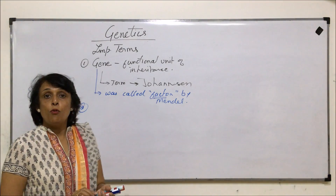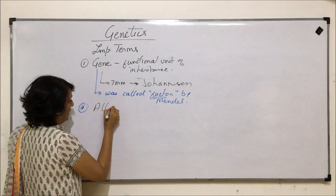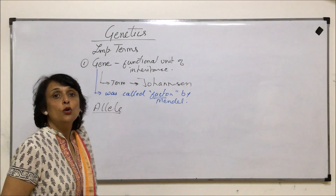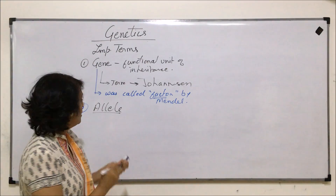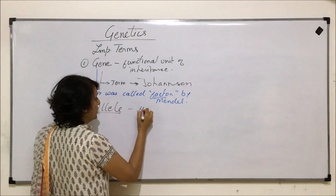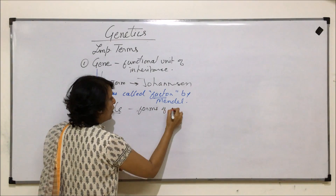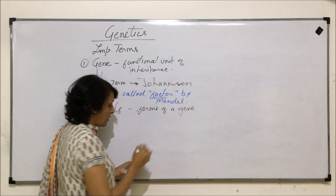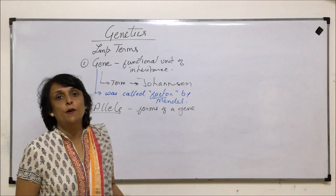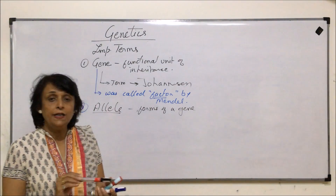The second important term is alleles. Alleles are two forms of a gene, or we can say just forms of a gene. Normally we talk of two forms because one is the dominant one and the other is the recessive one.